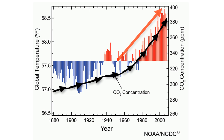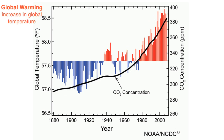As shown on the graph, the increase in greenhouse gas concentrations is directly related to rising global temperatures. This process is called global warming. As the planet warms, it causes changes in regional climates, which is commonly referred to as climate change.